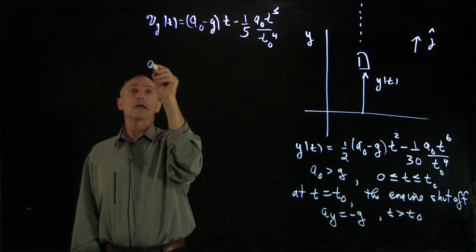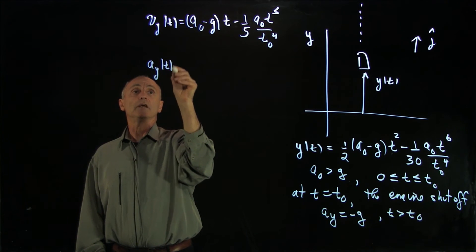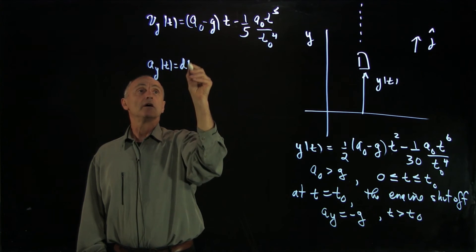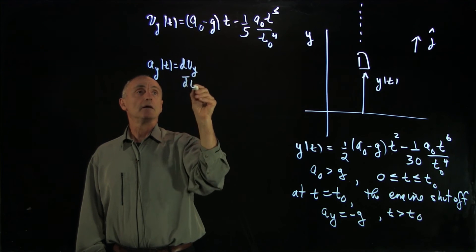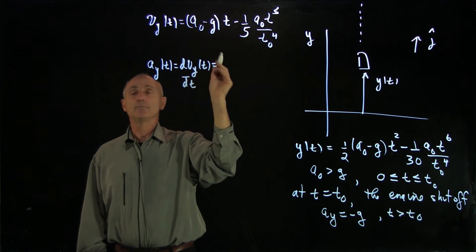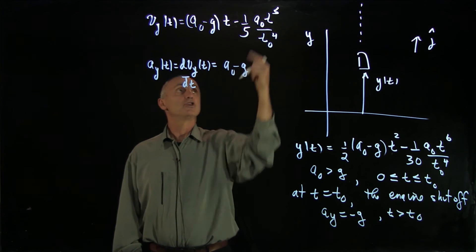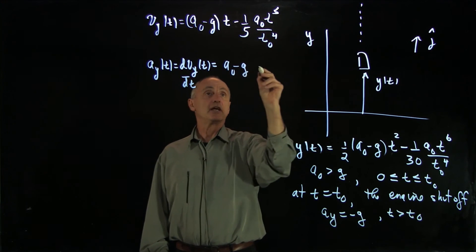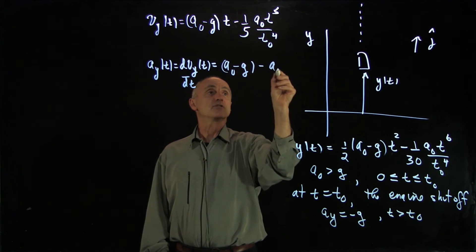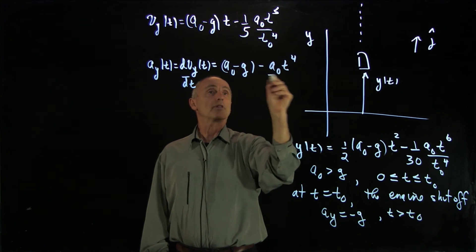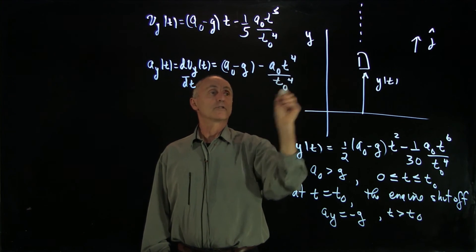Finally, we take the next derivative, a_y of t, which is d by dt. When we differentiate here, we get a0 minus g. The fives are canceling, and we have minus a0 t to the fourth over t0 to the fourth.